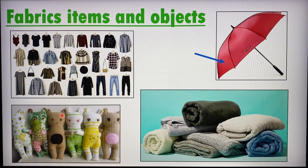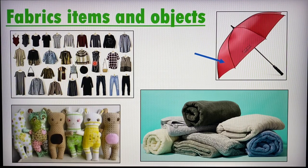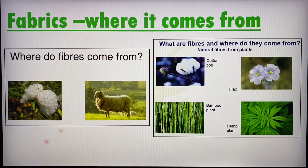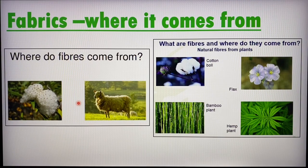Now let's move on to fabrics. Of course your clothes, shirts, dresses, pants, umbrellas, towels, and soft toys are all made from fabrics. There are two main sources of fabrics — they come from animals or from plants.